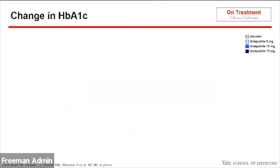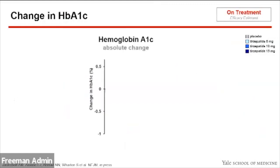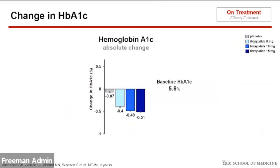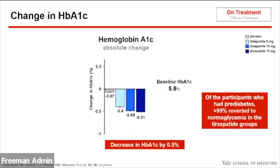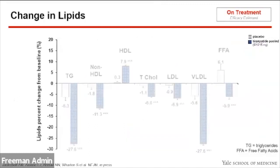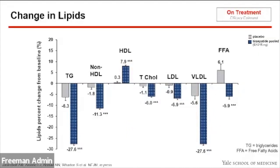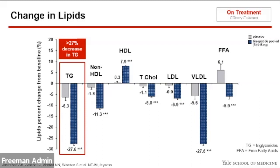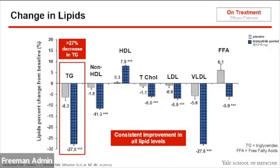In terms of some outcomes: change in A1c — the baseline A1c was 5.6, within normal range — and there was a decrease in A1c by half a percent. Additionally, of the participants who had prediabetes, more than 95% reverted to normal glycemia in the tirzepatide groups. In terms of lipids, participants were within normal range at baseline, but we saw improvements across the board, notably a greater than 27% decrease in triglycerides.